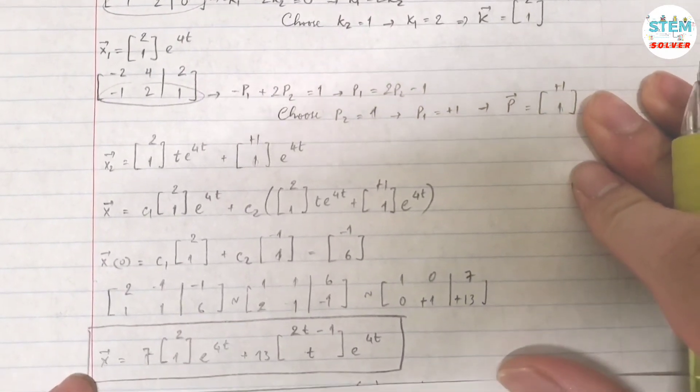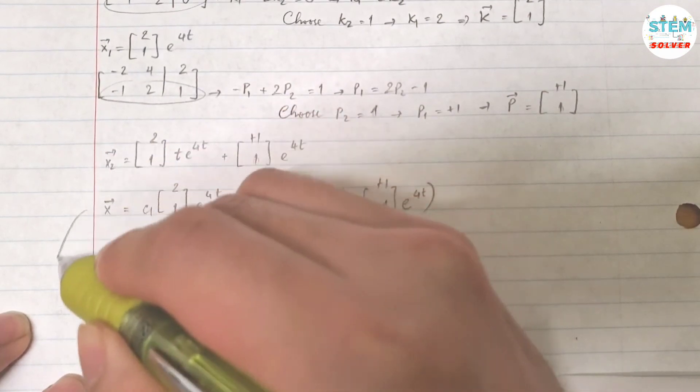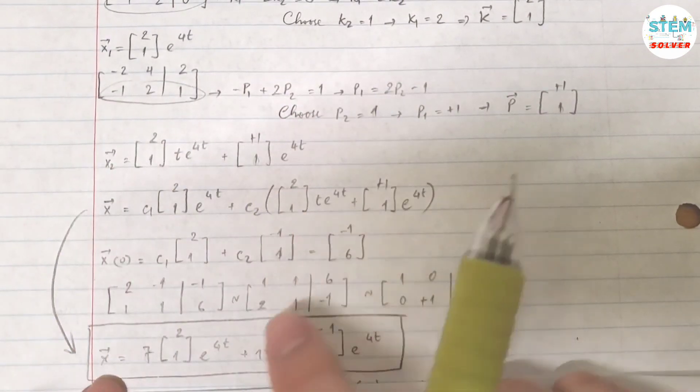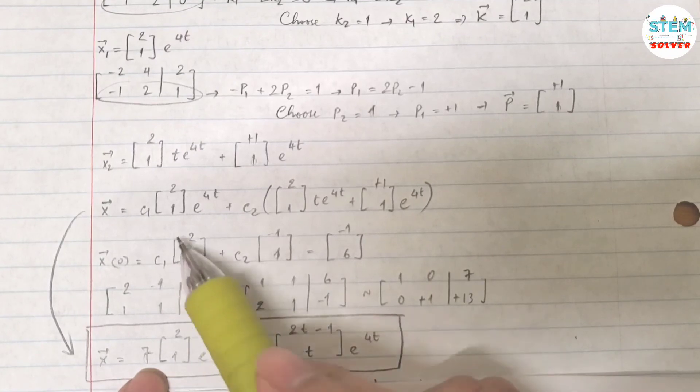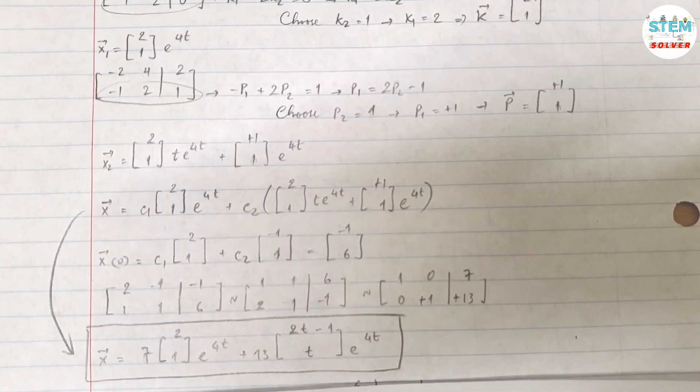Then my actual answer of this matrix is vector x equals 7 times this plus 13 times this. That's it.